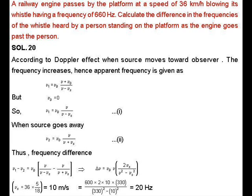The frequency difference ν₁ - ν₂ = ν₀[v/(v - vₛ) - v/(v + vₛ)]. From here, by calculation we get 20 Hz. So 20 is the answer.